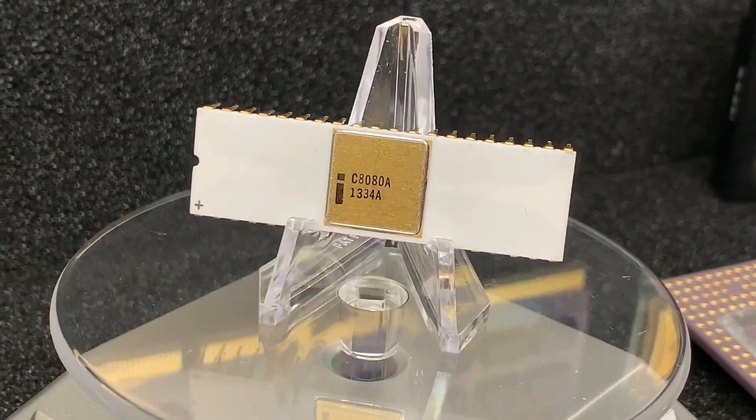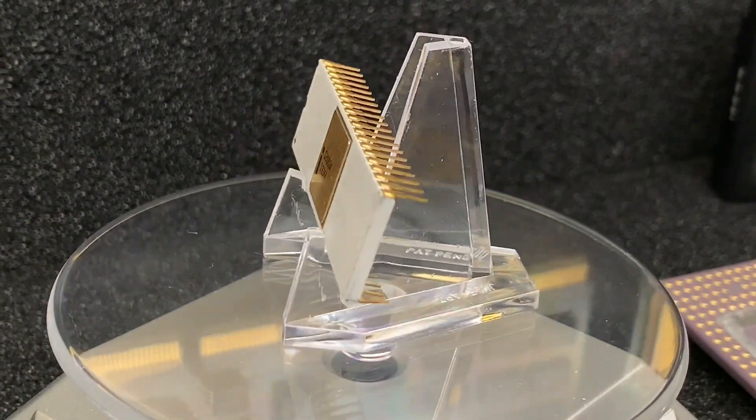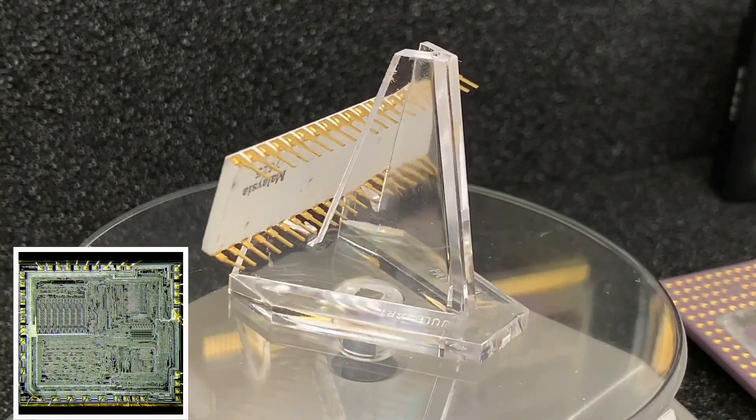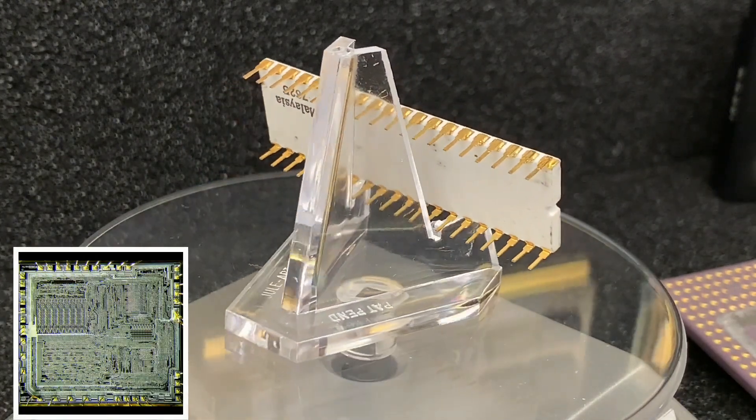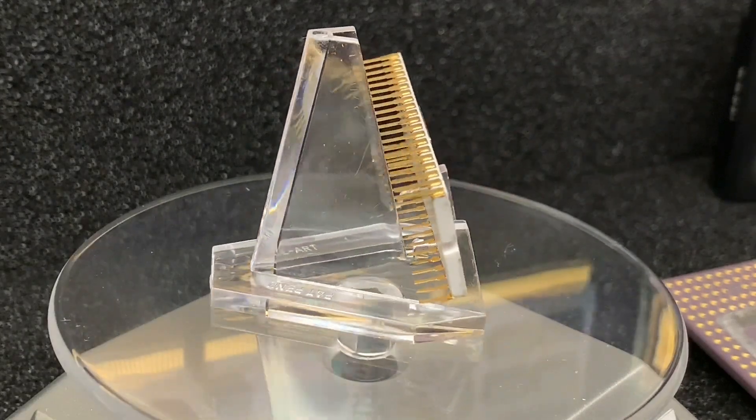The Intel 8080 was released in April 1974 and with its 6000 transistors and a clock speed of 2 MHz, you can call it the predecessor of the famous x86 technology.